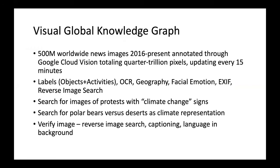So the visual knowledge graph allows us to do all these different things. Verification is a really interesting one — obviously in this era when we're talking about fake news, we're trying to verify and vet information. This ability to do reverse image search is a very powerful capacity. We can't tell you that this image hasn't really been modified, but we can tell you whether it's new or whether it has appeared before.